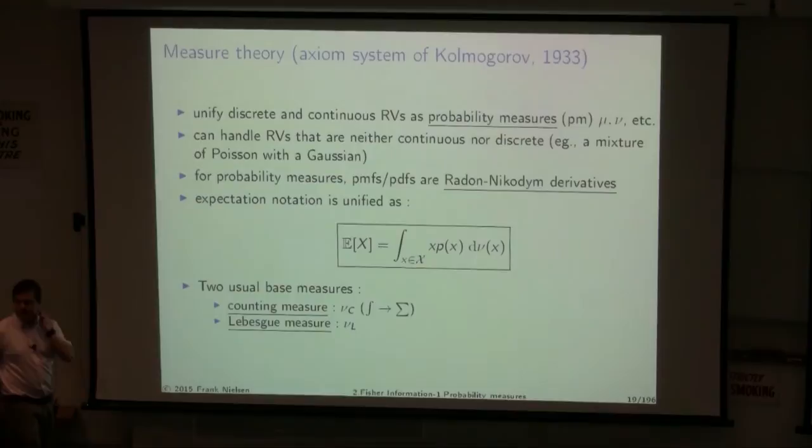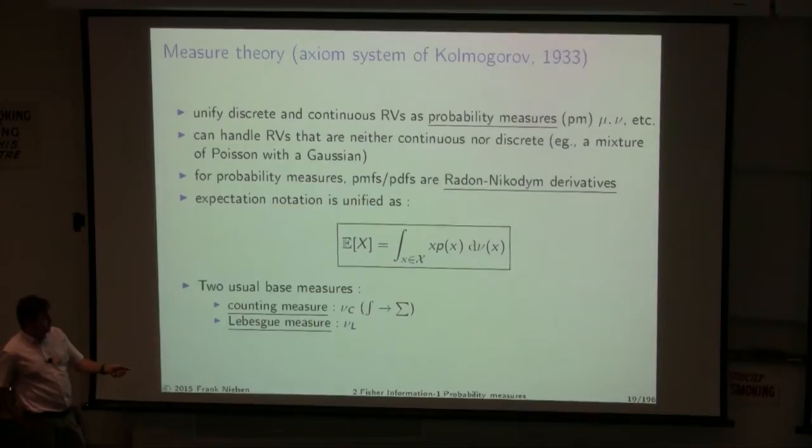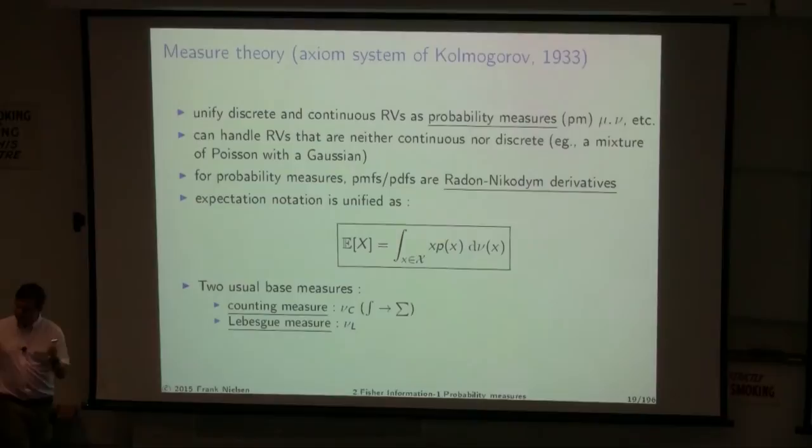A probability space consists of a sample space X, a sigma-algebra (subsets closed under countability, intersection, union, and complements), and a measure. It becomes a probability space when the measure sums to one over the full sample space. We have a probability space if we can write the Shannon entropy in the unified measure-theoretic way using Radon-Nikodym derivatives.